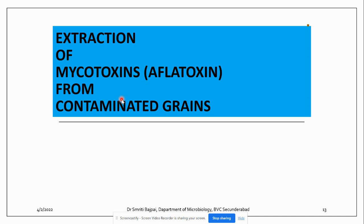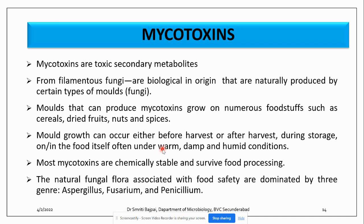Extraction of mycotoxins from contaminated grains. Mycotoxins are the toxic secondary metabolites present in filamentous fungi, so they are biological in origin as they are produced naturally by certain types of molds. These molds can produce mycotoxins when they grow on numerous foodstuffs such as cereals, dry fruits, nuts and spices.